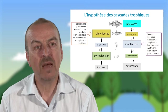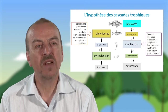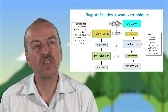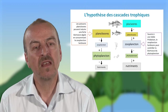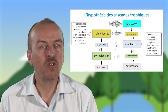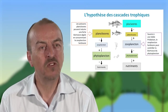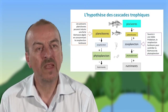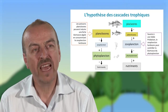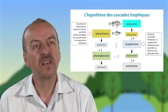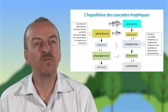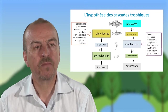Sur la partie droite du schéma, j'ai représenté une chaîne alimentaire à quatre niveaux trophiques. À la base, ce même phytoplankton, ensuite le zooplankton, les poissons planctivores, auxquels s'ajoute un nouveau maillon : le maillon des poissons piscivores.